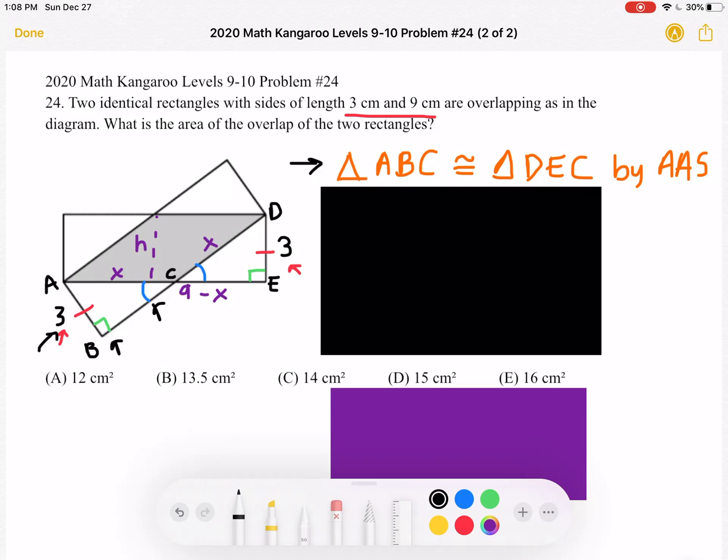Triangle ABC must be congruent to triangle DEC by angle, angle, side. And this is helpful because what we're trying to find is the area of the overlap, and this will help us do that.